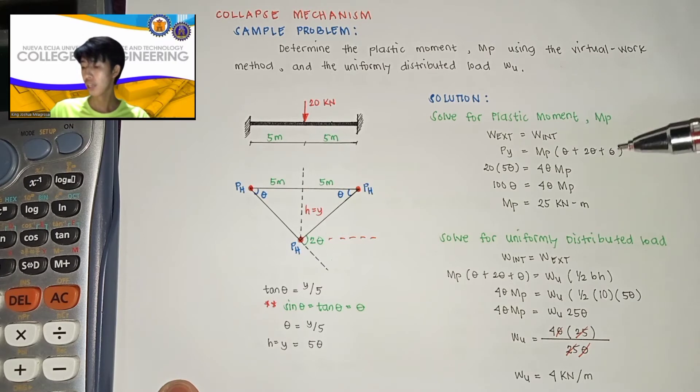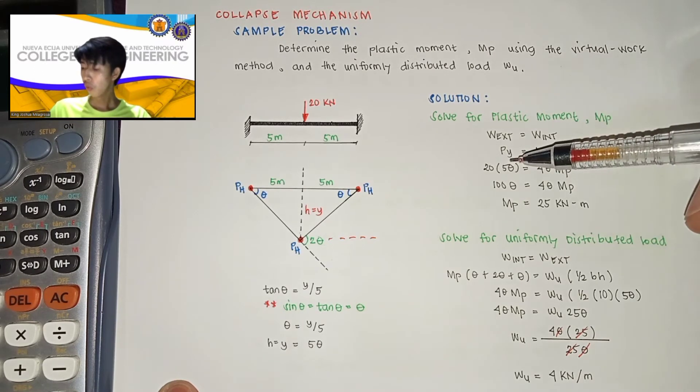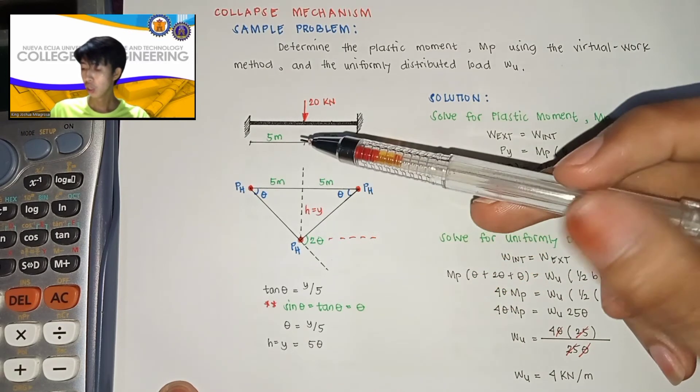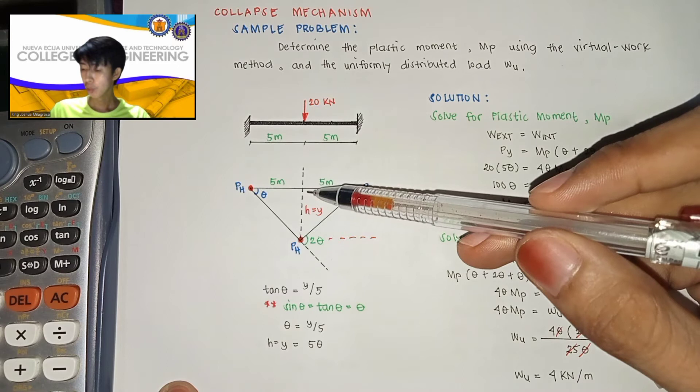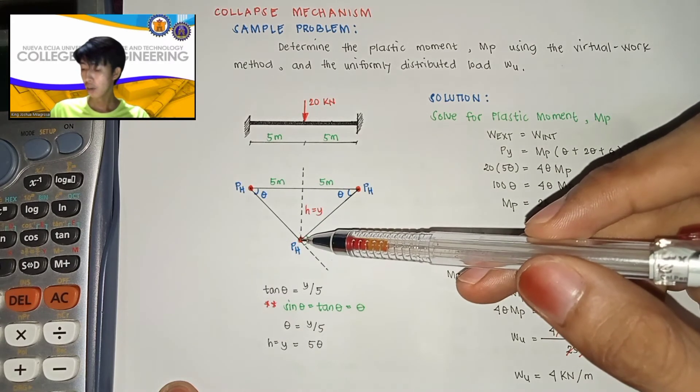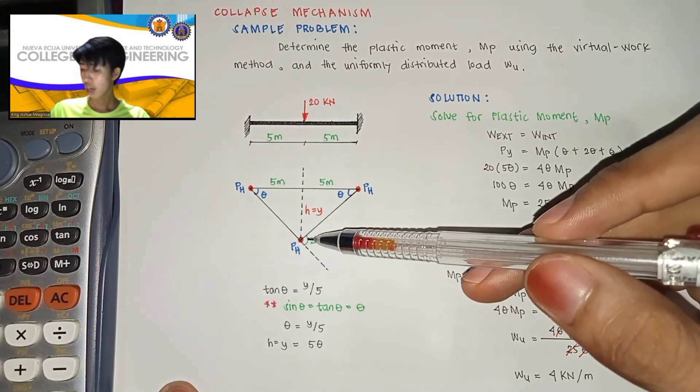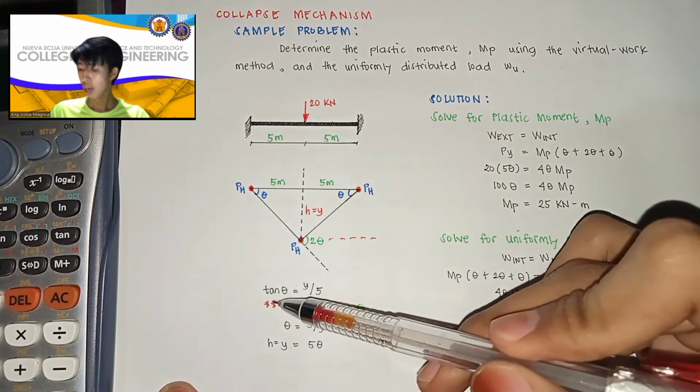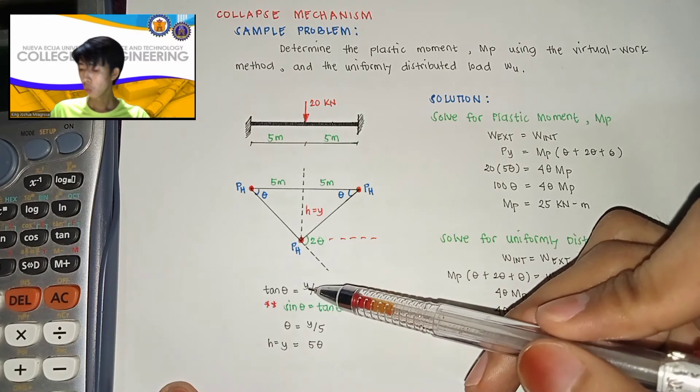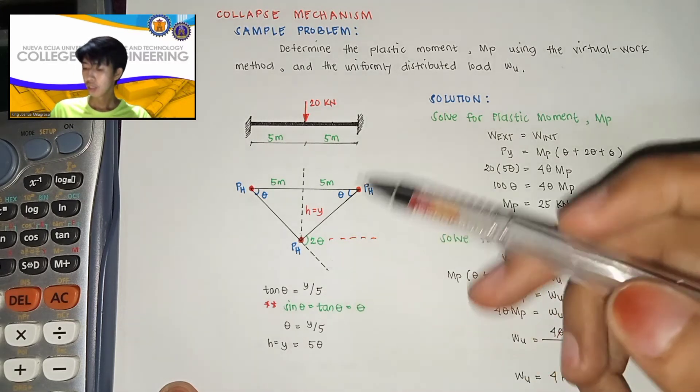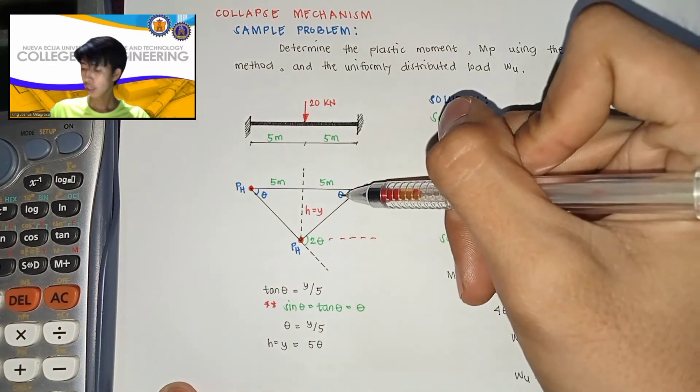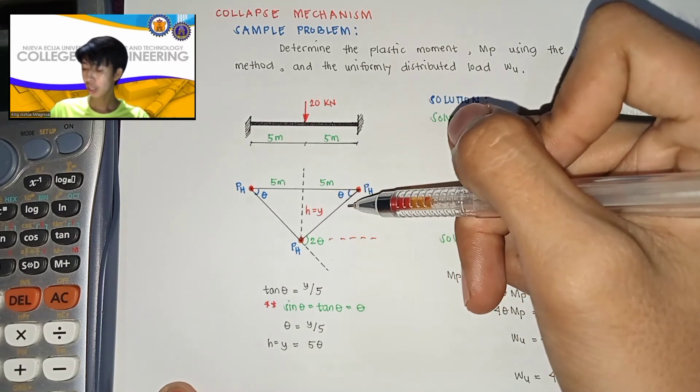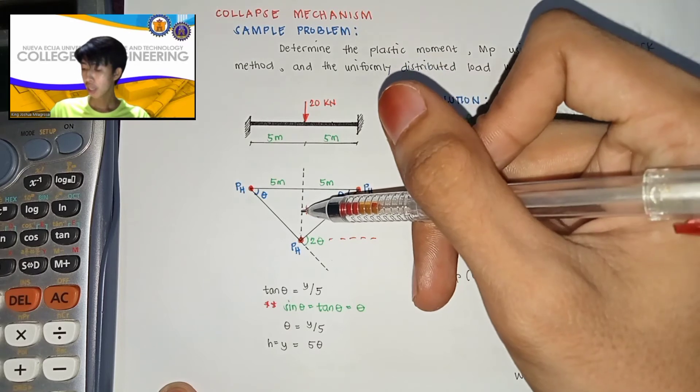For our py or yung height nung beam mula sa deflection nya, equals yan sa, by using Pythagorean theorem, equal yan sa tan theta is equal to y over 5. So since ito yung theta natin, we have here the opposite and the adjacent, kaya y over 5.